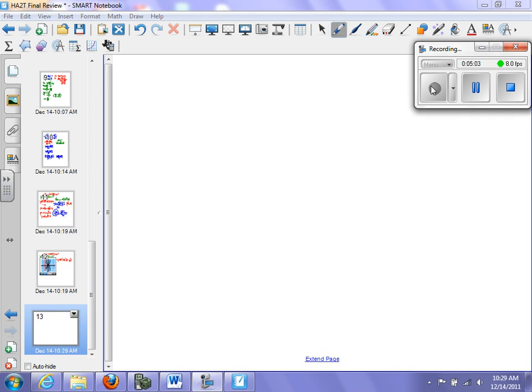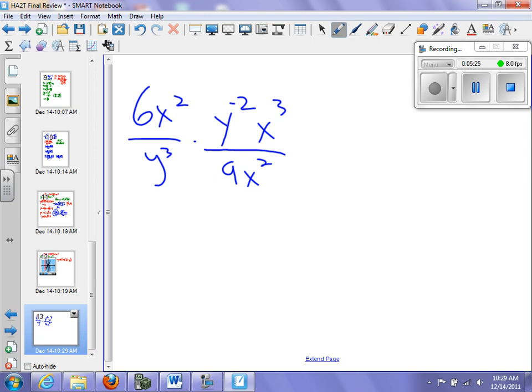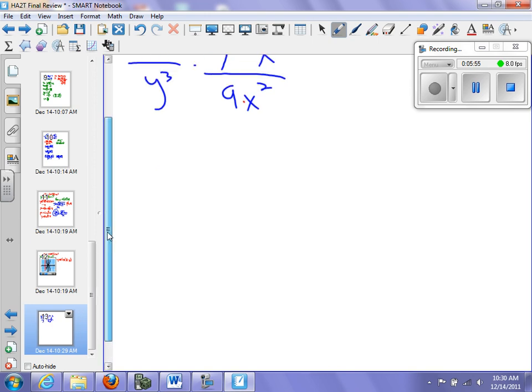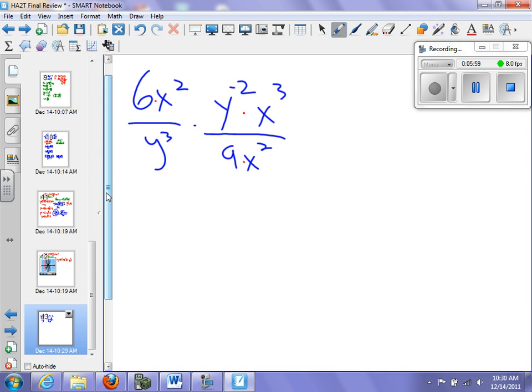So 53, we're going to simplify this: 6x squared over y cubed times y to the negative 2x to the third over 9x squared. When I'm simplifying, it's a little bit tricky to put the multiplication sign in there because it's really irrelevant. I could rewrite this whole thing as just one expression. I don't really need that multiplication sign. My approach is to simplify things as much as I can quickly. One thing I can see immediately is I have an x squared on the top and an x squared on the bottom, so I got rid of those.